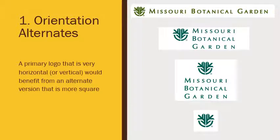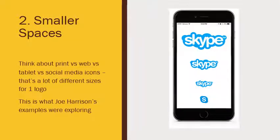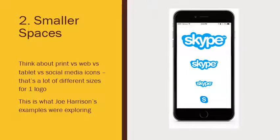So you can see how, while they'd prefer you use the long primary horizontal logo, they've given you a less horizontal option, then a square or vertical option, and then finally just the symbol. Another option is to think about smaller spaces — print versus web versus tablet versus social media icons. That's a lot of different sizes for one logo, which is exactly what Joe Harrison's examples were exploring. You can definitely simplify as your logo shrinks.